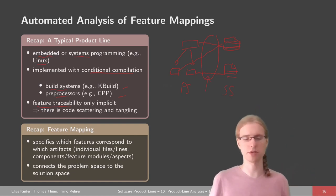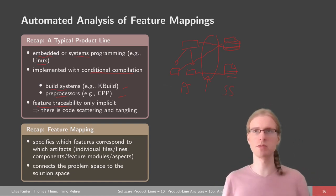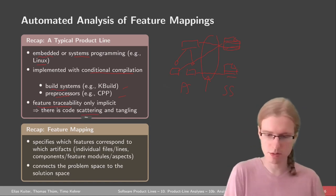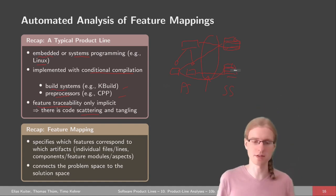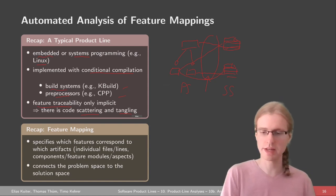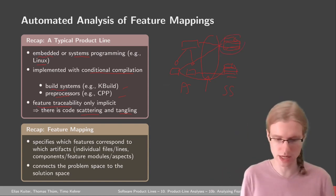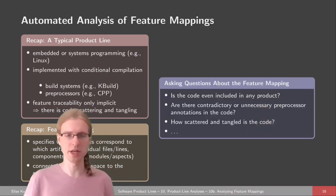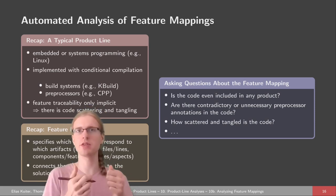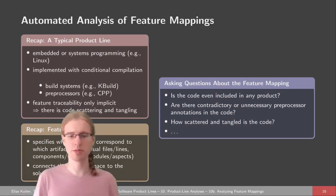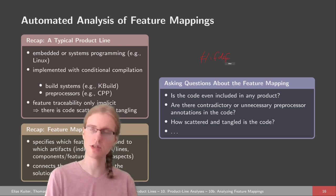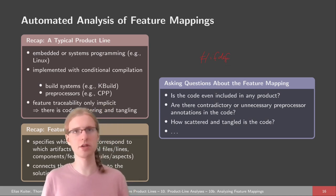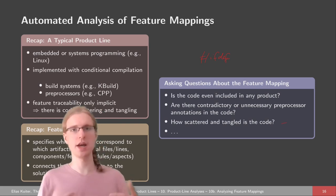This is typically not trivial for conditional compilation because traceability is only implicit. We can have code scattering — a feature occurring in multiple files — and also tangling, where one file includes two features. We might ask questions like: is this code even included in any product? Are there preprocessor annotations that are contradictory or unnecessary? And we might also ask about statistics on code scattering and tangling.